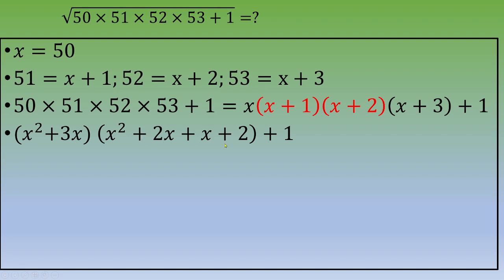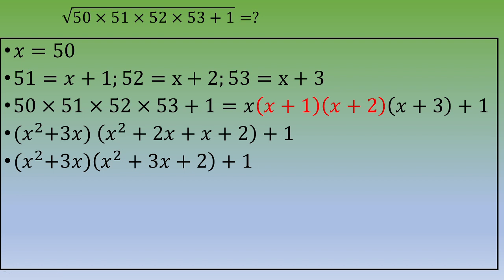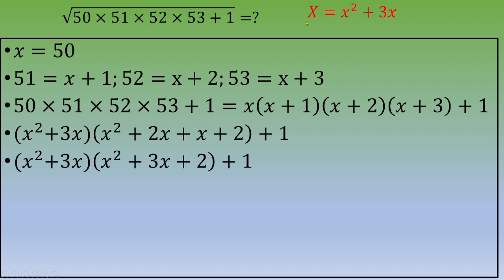You can combine the 2x and x terms and end up with (x squared plus 3x) times (x squared plus 3x plus 2) plus 1. You notice that the quantity x squared plus 3x appears twice, so you can set capital X equal to x squared plus 3x. Plugging capital X in, the expression becomes X times (X+2) plus 1.